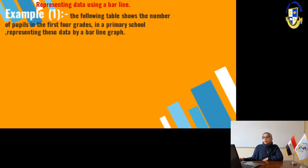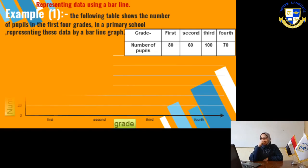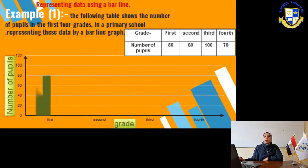Now, in this slide, we have an exercise. We represent data using a bar line. The following table shows the number of pupils in the first four grades in a primary school. Representing this data by a bar line graph. This is the table which we have. We collect this data by this way in a table. Then, we want to represent it in a graph, in a bar line. Each grade, we will draw for it a bar.